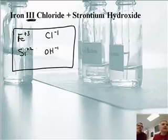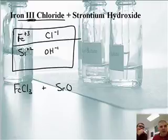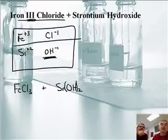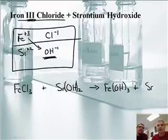I'm going to put together iron three chloride, FeCl₃. Plus strontium hydroxide, Sr(OH)₂. A common mistake I see: hydroxide, you need two OH's, not one O and two H's. Now we're going to trade partners. Iron is going to get together with hydroxide. Fe(OH)₃. Notice the parentheses. Plus SrCl₂. I have to play the charge game: two and one, three and one.